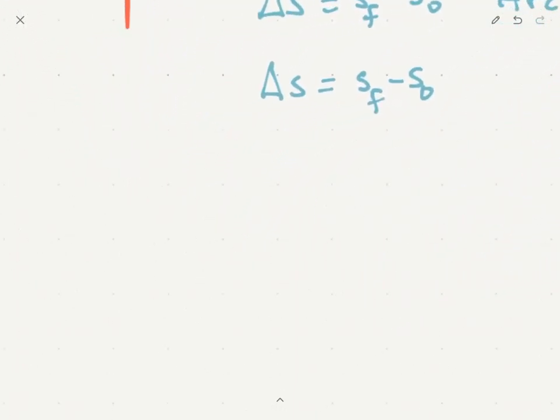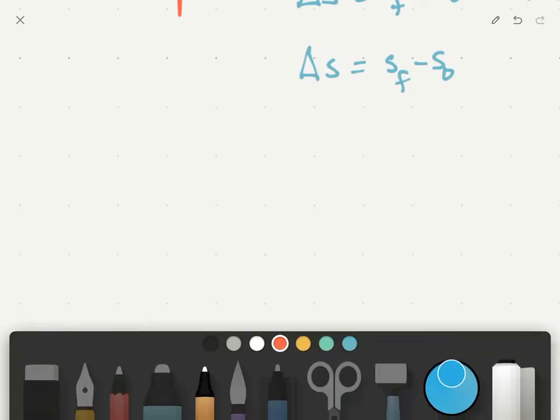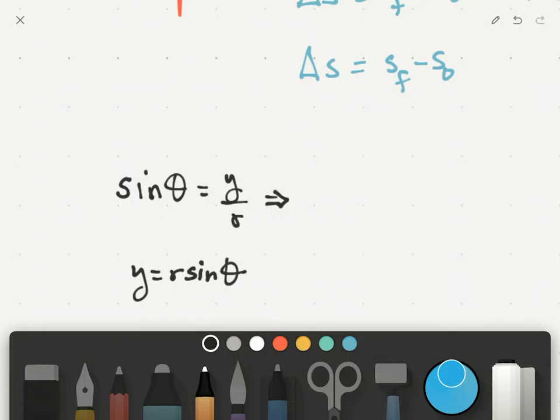And I think that that is pretty much it. Now, there is a connection between the arc length and the sine function, and I do want to make that real quick. So remember that the sine function is equal to Y divided by R, which implies that Y is just equal to R sine theta.